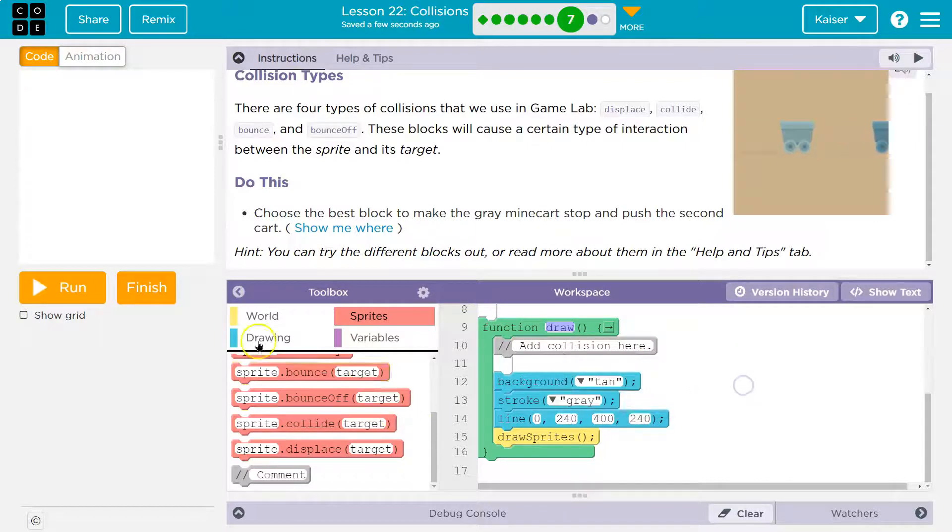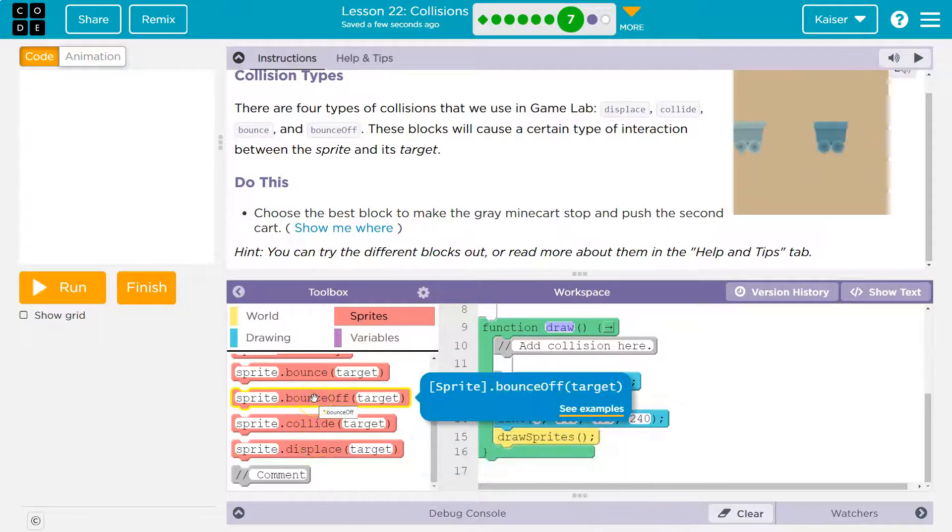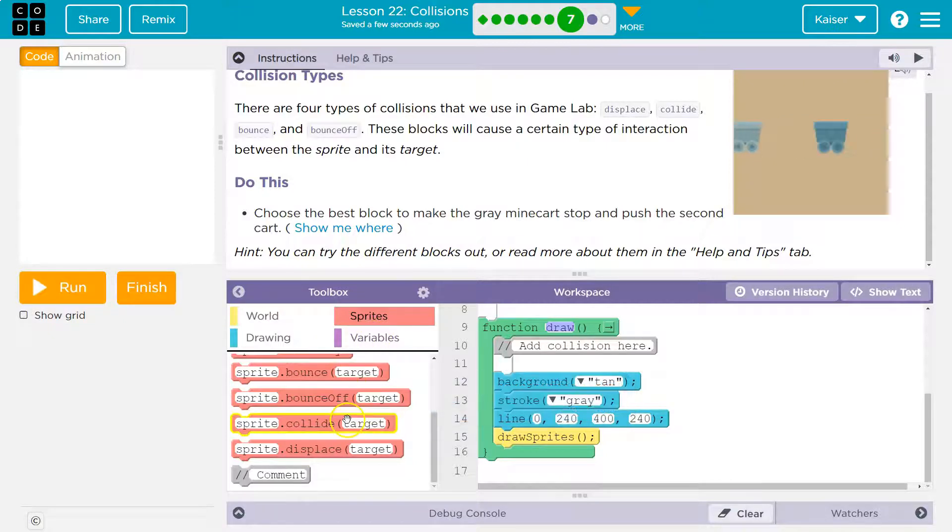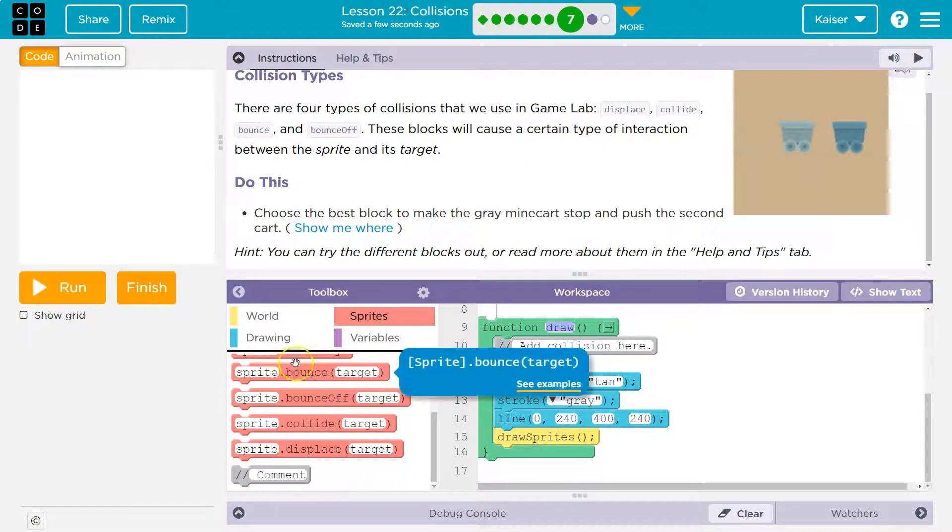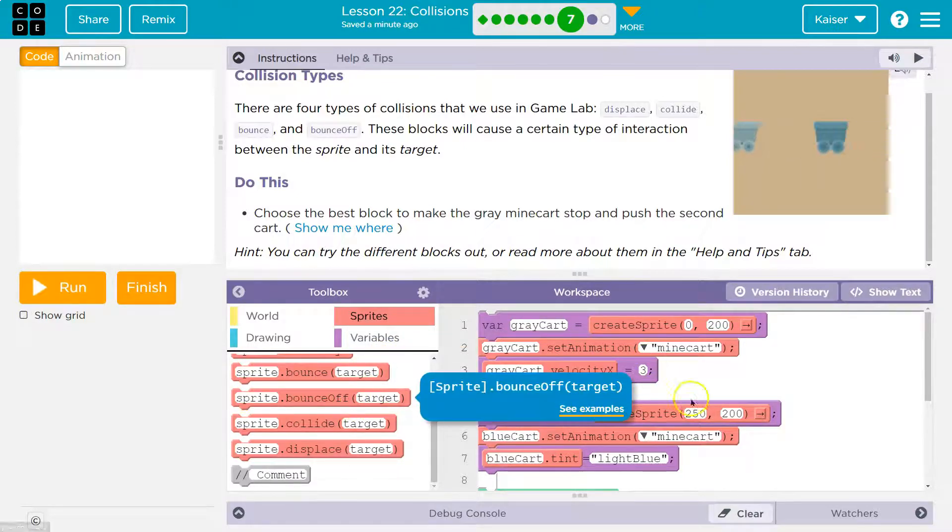Keep in mind, each of these statements - bounce, bounce off, collide, and displace - has a conditional inside of it. Inside the method, there's this hidden conditional, an if statement, and the if statement is asking if they are touching. So if this sprite is touching this target, for instance if this gray cart is touching this blue cart, it will bounce.